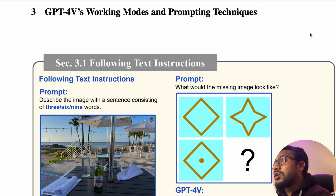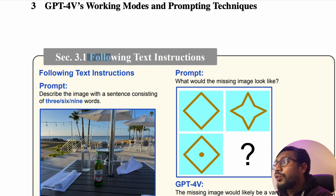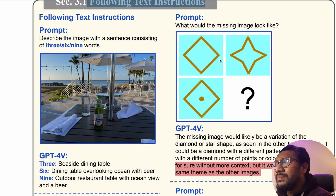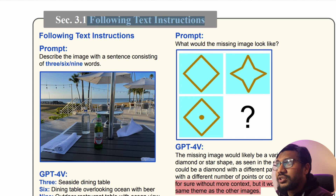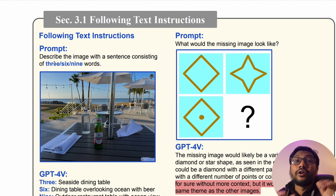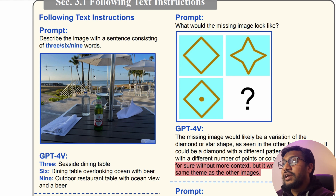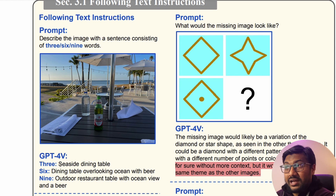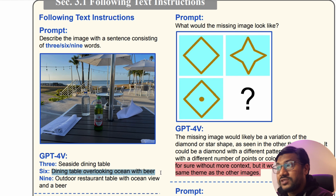The first one — following text instructions. Imagine you have got an image. Once you upload the image, you can say describe the image with a sentence consisting of three, or six, or nine words. When you do this, it is going to give you three words, six words, and nine words as separate outputs.